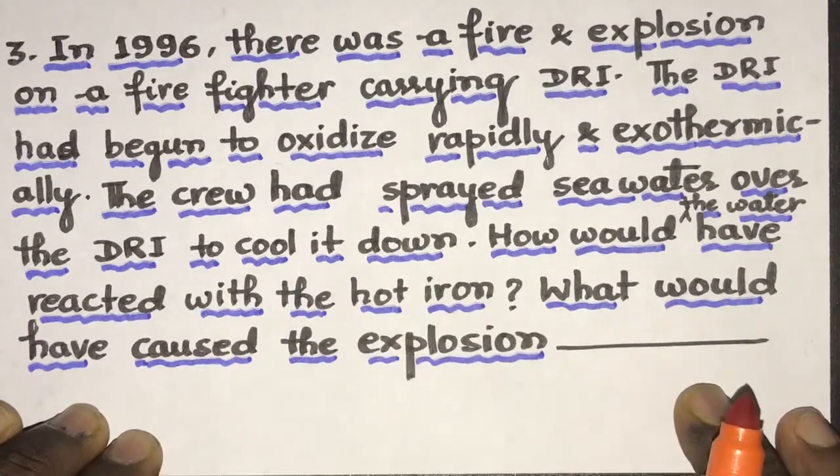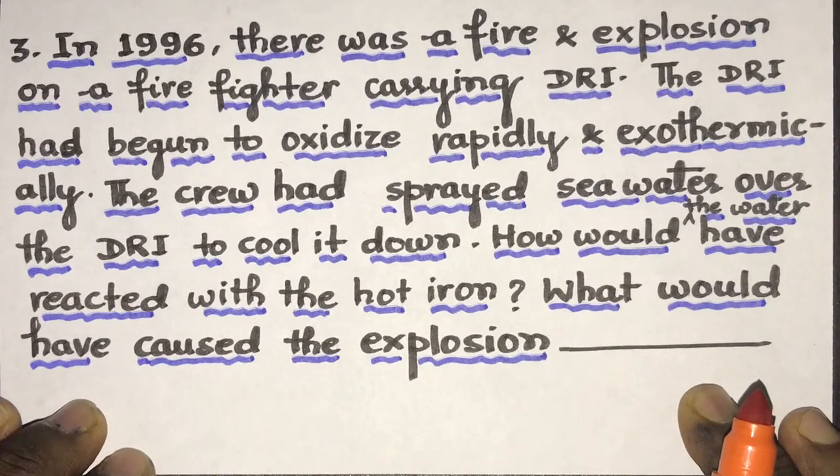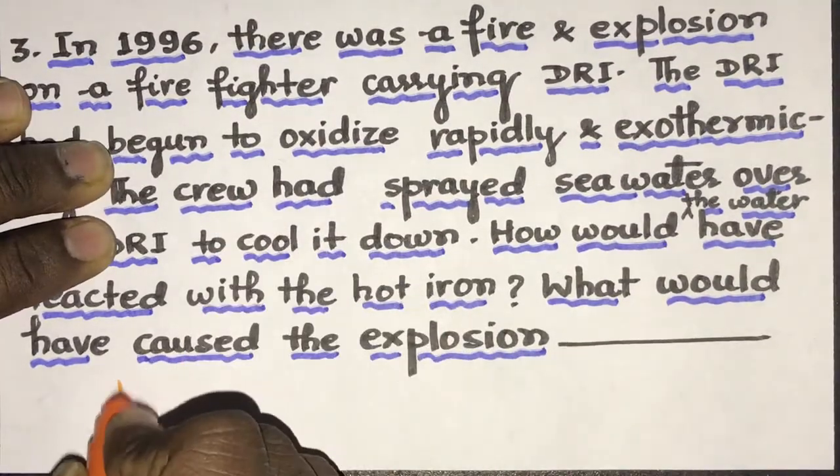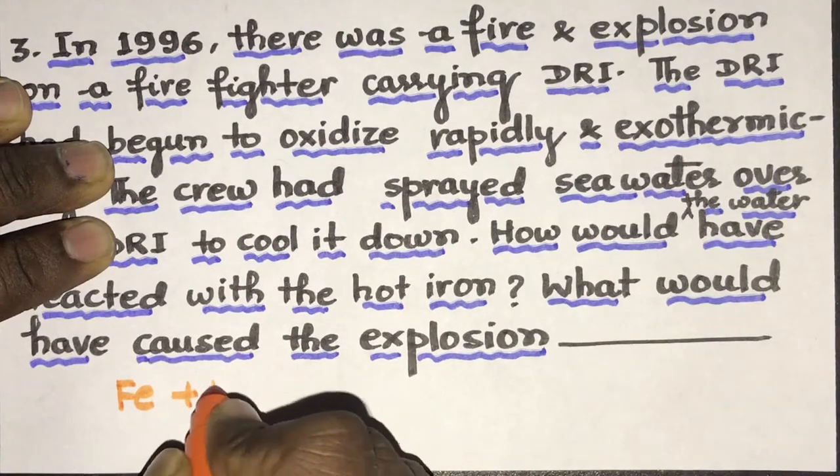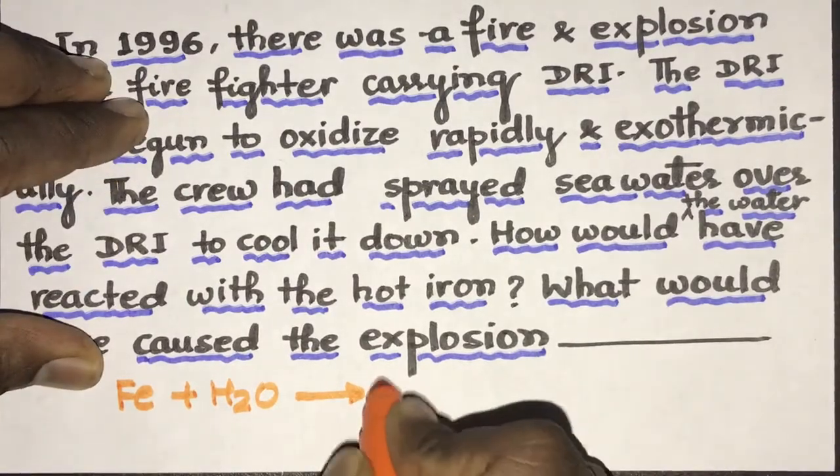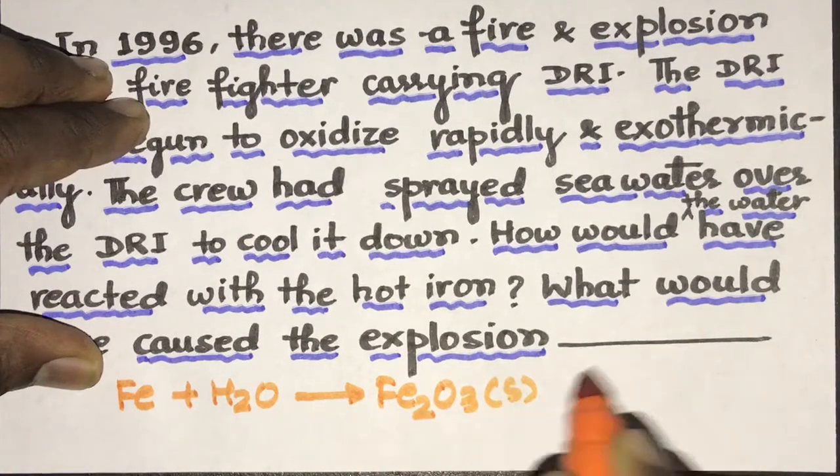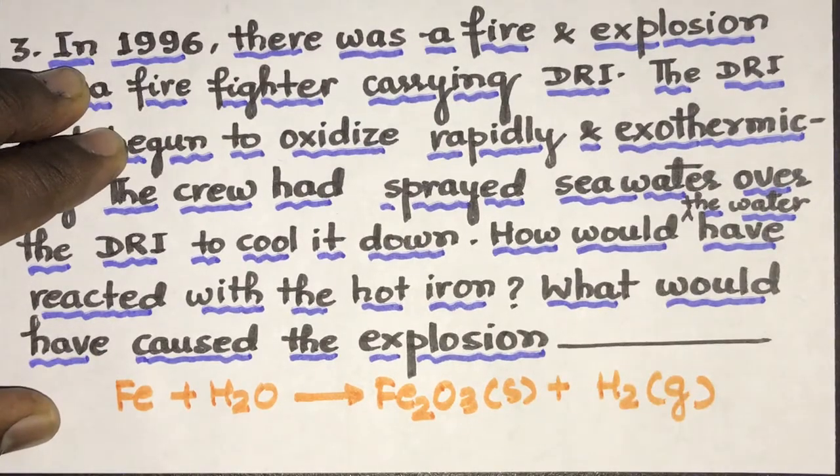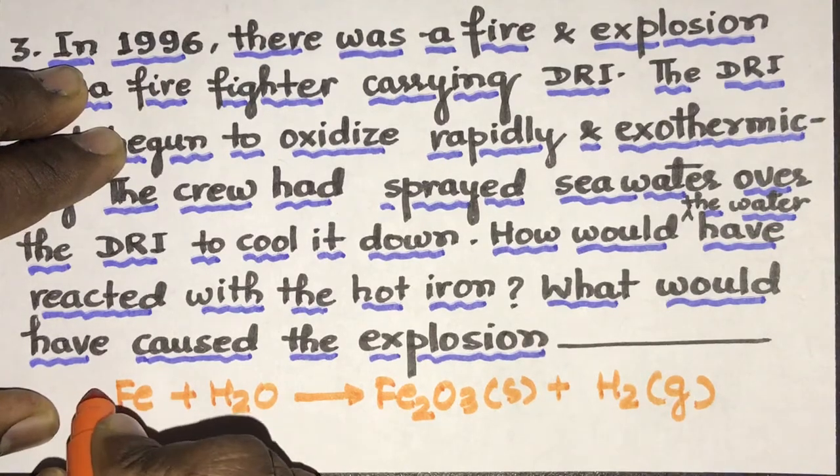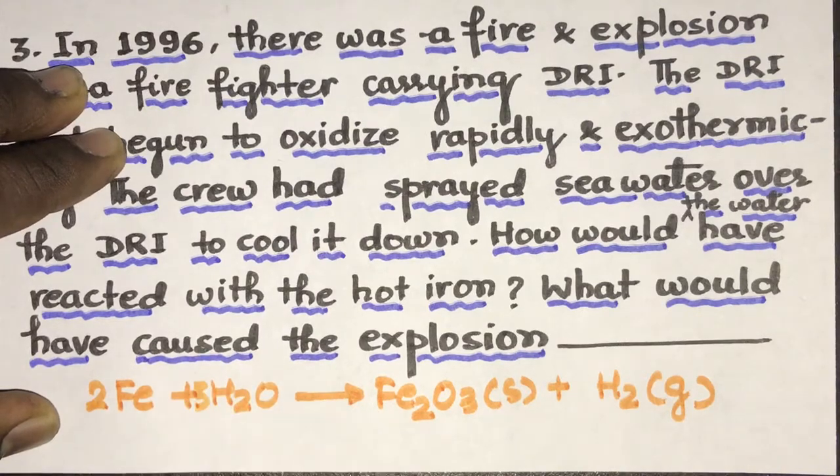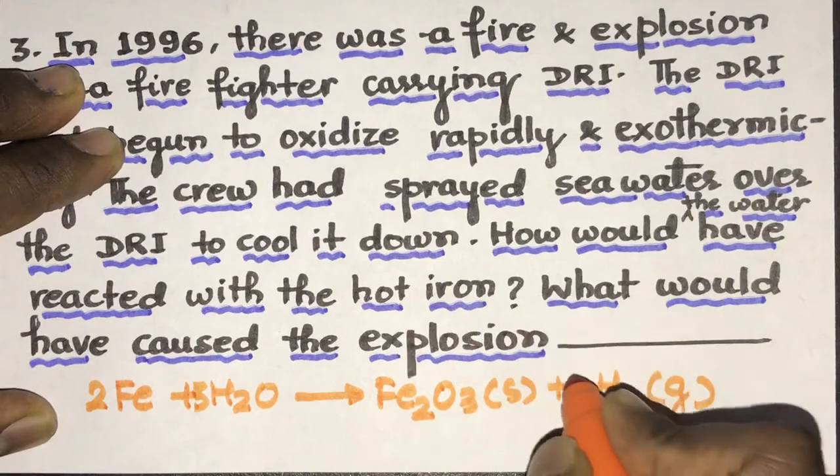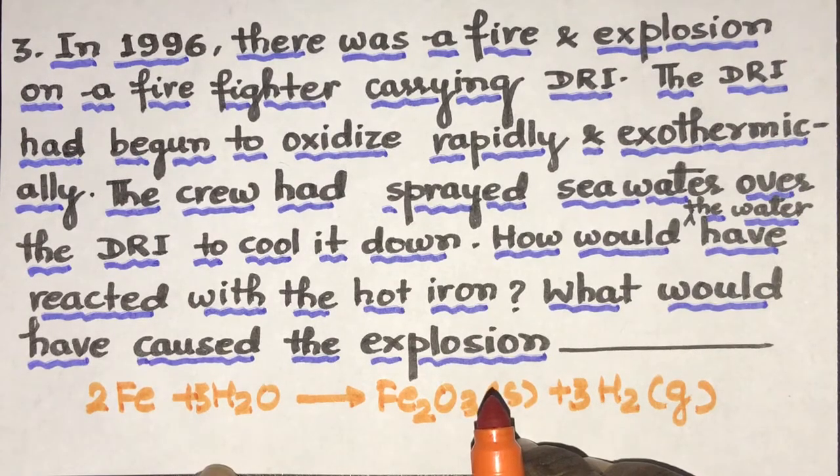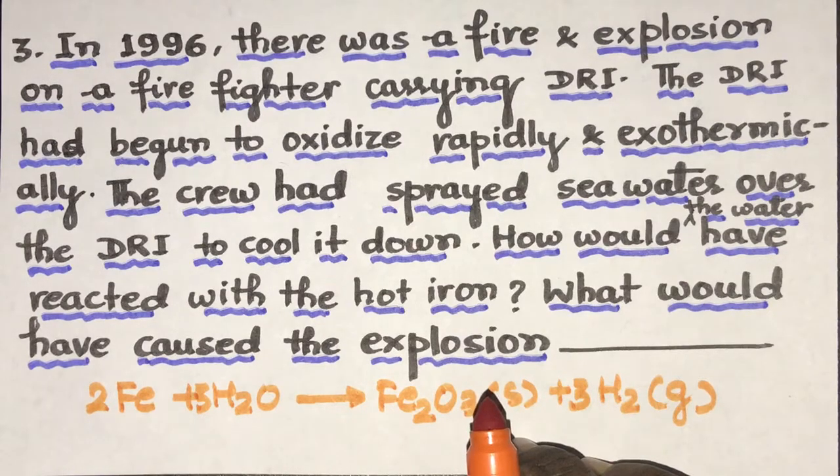So in this problem, we are asked to find the reason behind the explosion of DRI. So we know that iron when it is red hot, it reacts with H2O liquid to form iron oxide that is Fe2O3 in solid state plus hydrogen gas. So this is not a balanced reaction, we have to balance it. So there will be 2 Fe, and there will be 3 H2O. So this is the chemical reaction that will take place when we spray water on red hot iron.